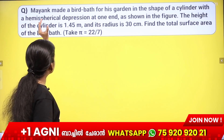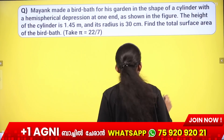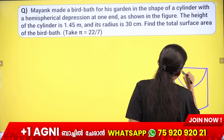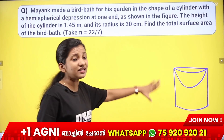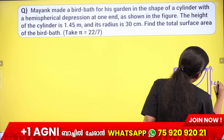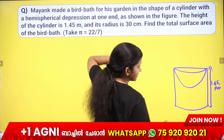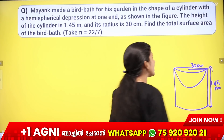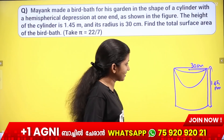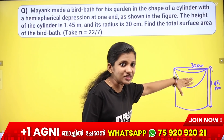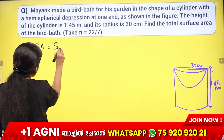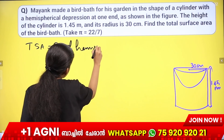Next: Maya made a bird bath for his garden in the shape of a cylinder with a hemispherical depression at one end. The height of the cylinder is 1.45 meters, and the radius is 30 centimeters. Find the total surface area of the bird bath. Take π = 22/7. The total surface area includes the hemisphere surface area plus the cylinder surface area.